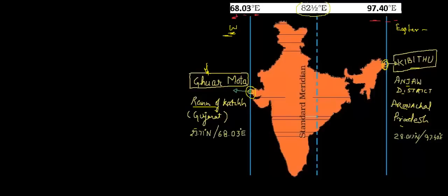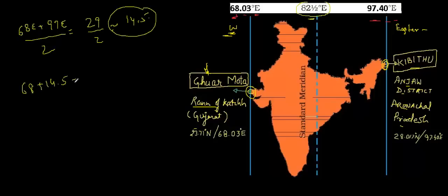This line is 82.5° east, and if we'll just make the average of 68 east and 97 east, it comes out about 29 by 2, or somewhere 14.5. So this 82.5 is 68 plus 14.5, it's somewhere 82.5, and similarly 97.4 minus 14.5 on the left hand side. It comes out to be approximately the same. So either go from this side, or either go from this side, we come to the central point of India.